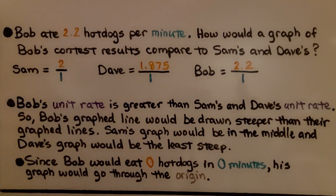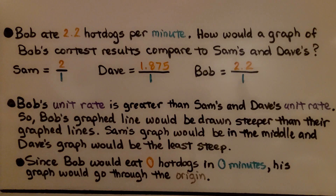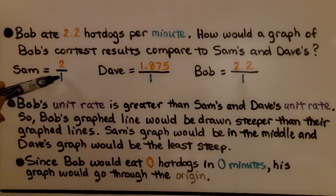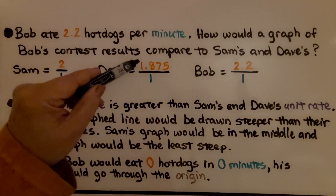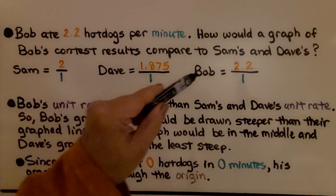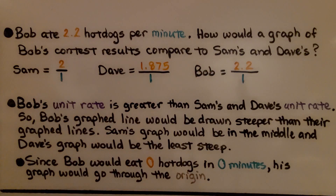Now we have a third contestant: Bob, who ate 2.2 hot dogs per minute. How would a graph of Bob's contest results compare to Sam's and Dave's? Sam had a unit rate of 2 over 1, Dave had a unit rate of 1.875 over 1, and Bob has 2.2 over 1 — that's 2.2 hot dogs per minute.